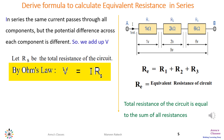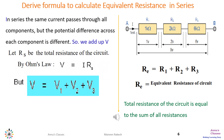Ohm's law is applicable here: V equals I times Rs, where Rs is the total resistance of this circuit. We can write that the total potential difference V equals V1 plus V2 plus V3 for this circuit.